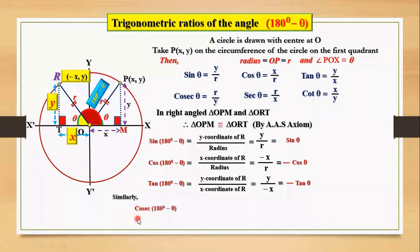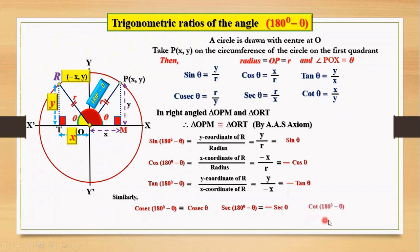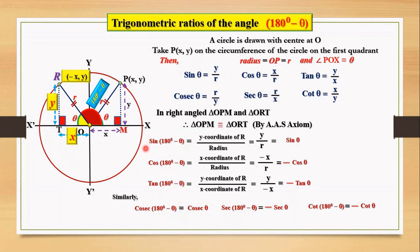Similarly, cosec(180° - θ) equals cosec θ, sec(180° - θ) equals minus sec θ, and cot(180° - θ) equals minus cot θ. These are the trigonometric ratios of the angle 180 degrees minus theta. In our next video, we will be finding trigonometric ratios of the angle minus theta. Thank you for watching this video.